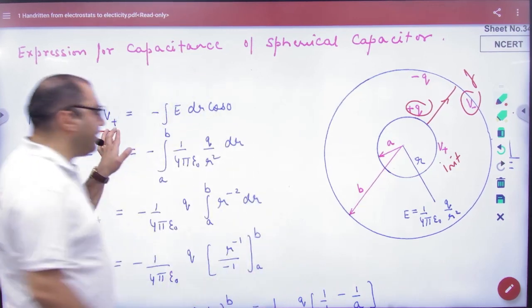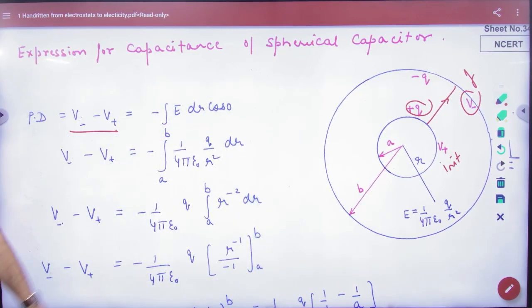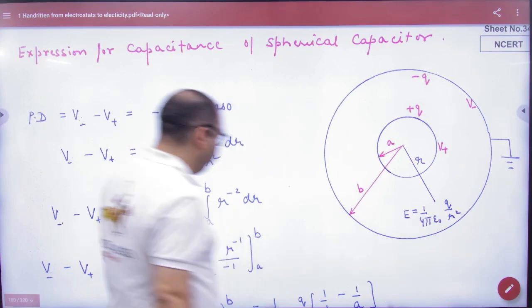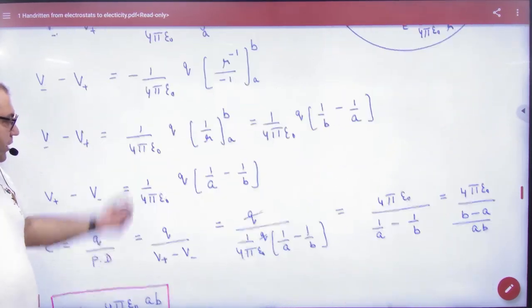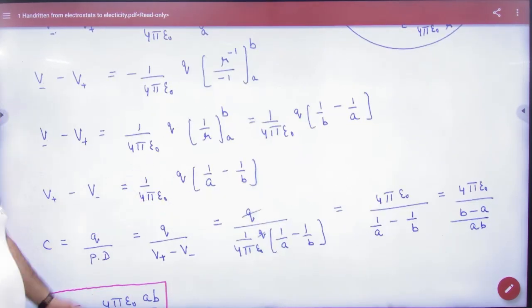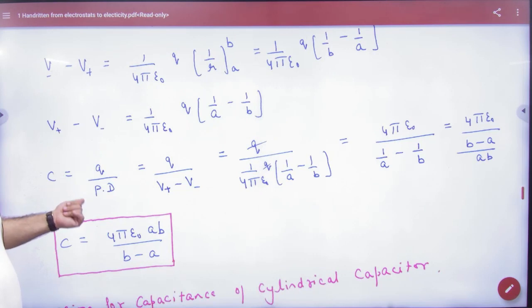Final potential minus initial potential - put the E formula from inner shell to outer shell, radius A to B. If I integrate it, the potential difference will come, and if I want capacitance, I will divide.